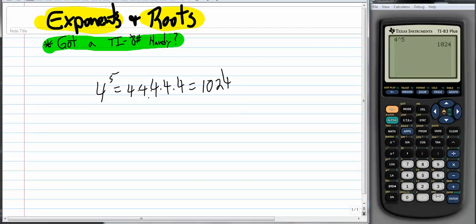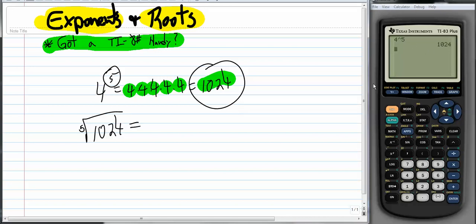Okay. So the opposite, or a way to undo this 4 to the 5th power, would be to take our 1,024 and see if we could find the 5th root. Well, we know the answer is going to be 4, because 4 times itself 5 times is that number. But on the calculator we need to practice being able to do that. So the 5th root,